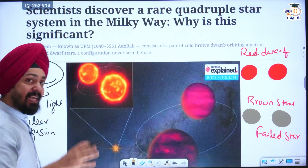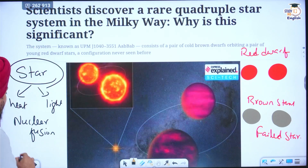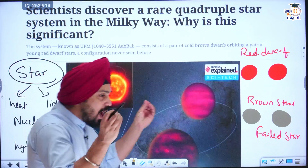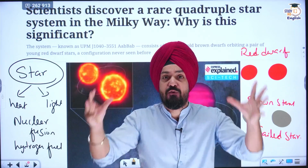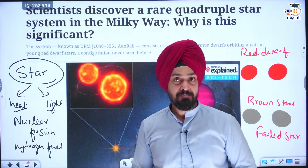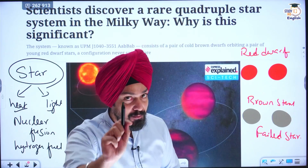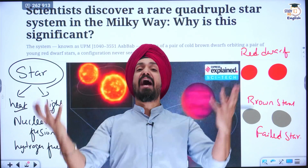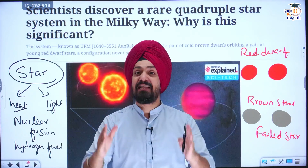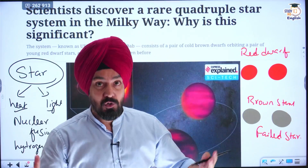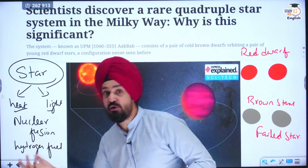Inside the core of these objects, hydrogen fuel is burning. Two hydrogen atoms combine to form helium, and helium is the source of heat and light. But Earth is not a luminous object. Even the moon is not a luminous object, because inside their core, the mass is not enough to perform nuclear fusion.